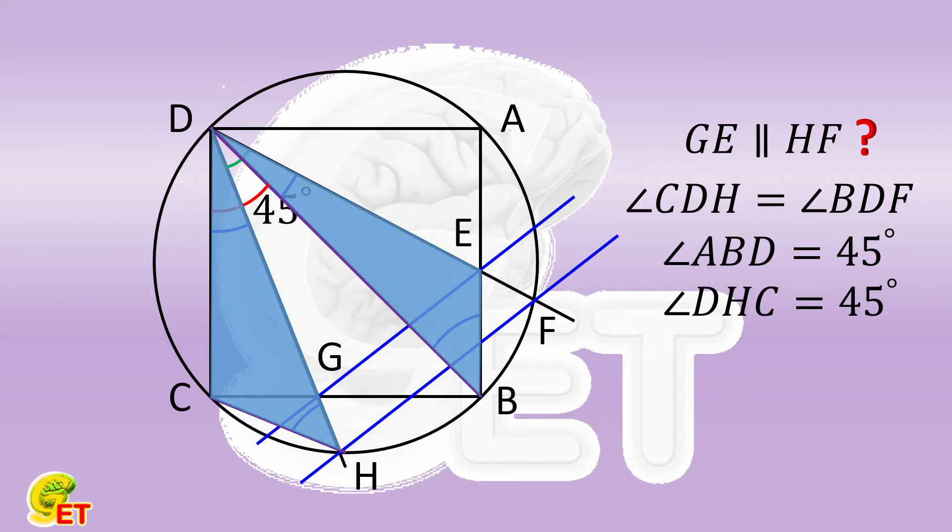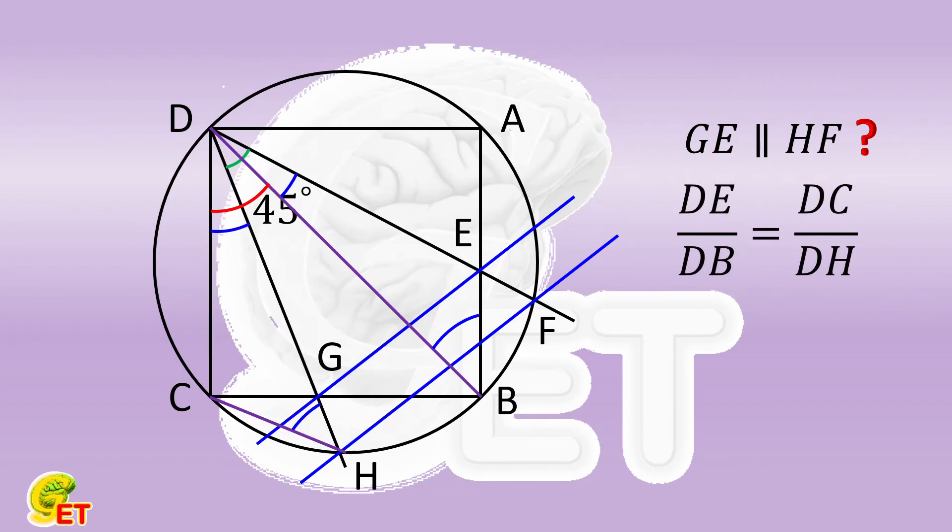As a result, DE over DB is equal to DC over DH. In the same way, by connecting AF, we can also get that the triangle DGB is similar to the triangle DAF. So DG over DB is equal to DA over DF.